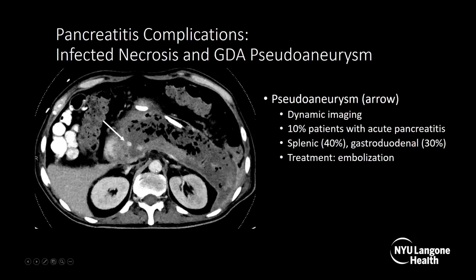Here's another example. On this axial CT with IV and positive oral contrast, surrounding and replacing the pancreas is a heterogeneous collection with dense areas — pancreatic necrosis — with air bubbles throughout, confirming infected pancreatic necrosis. The arrow points to a blush of contrast matching the aorta, which is a pseudoaneurysm arising from the gastroduodenal artery. Pseudoaneurysm requires dynamic imaging for diagnosis, occurs in 10% of patients with acute pancreatitis, with 40% being splenic and 30% gastroduodenal, and treatment is embolization.